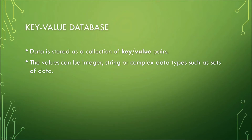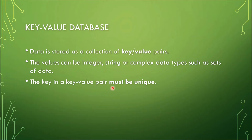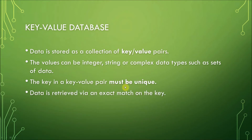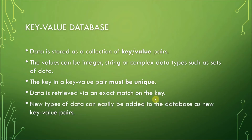The values can be integer numbers, string names, addresses, or complex data types such as sets of data, files, or videos. The key in a key-value pair must be unique — you cannot get the exact match if there are duplicate keys. So in key-value databases, keys must be unique. To retrieve data, you must have the exact key, so data is retrieved via an exact match on the key.